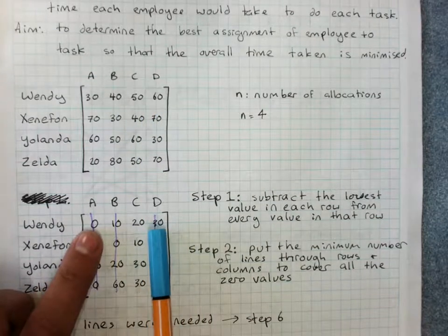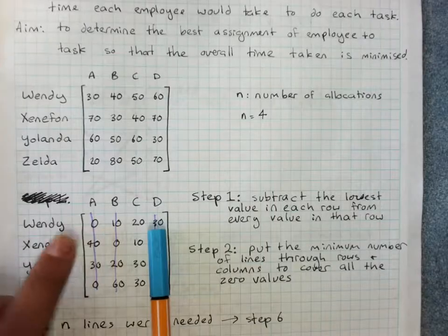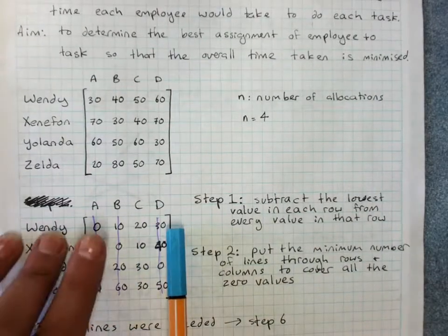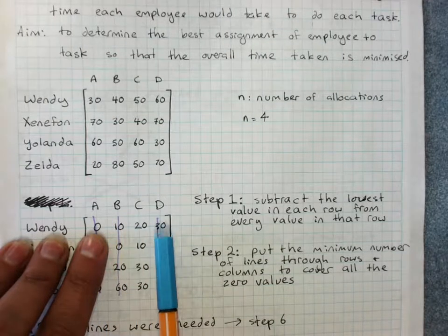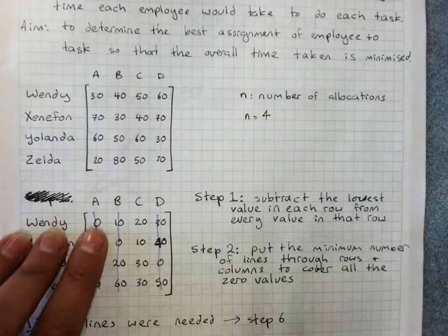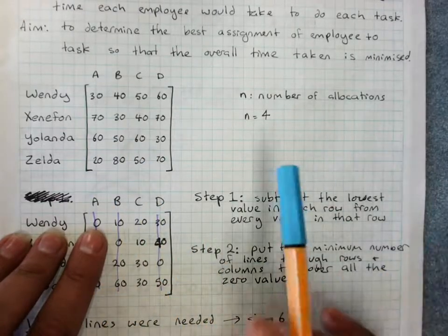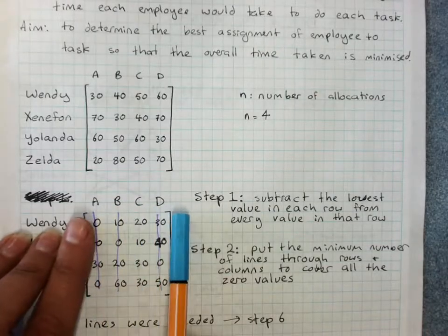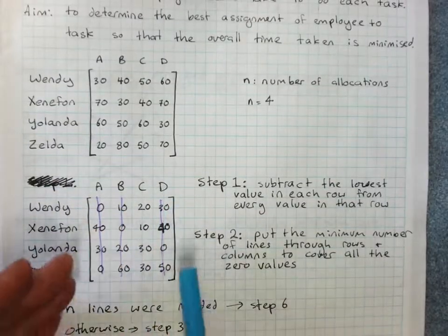D would take her 30 minutes longer. So by subtracting the same value from everything we haven't actually changed the overall relative cost of Wendy doing something. A is still the cheapest for Wendy, followed by B and then C and then D. So our aim in doing this is to get a relative zero cost option for each machine based on reducing complexity.